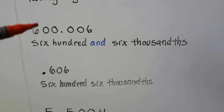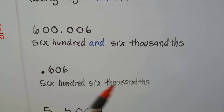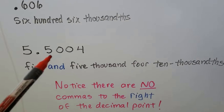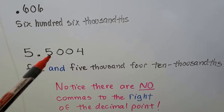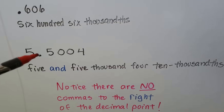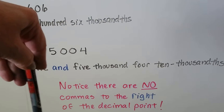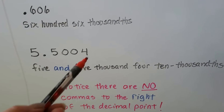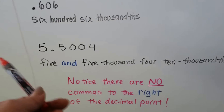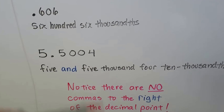On the right side of the decimal point we have five-zero-zero-zero-four, and we would read that as five-thousand-four ten-thousandths, because that four is in the ten-thousandths place. So we have five and five-thousand-four ten-thousandths. Just read it as it would be without the decimal — five thousand four — and then say the decimal place value: ten-thousandths. There are no commas to the right of the decimal point, unlike the left side where we put commas every third digit for every period group of three.